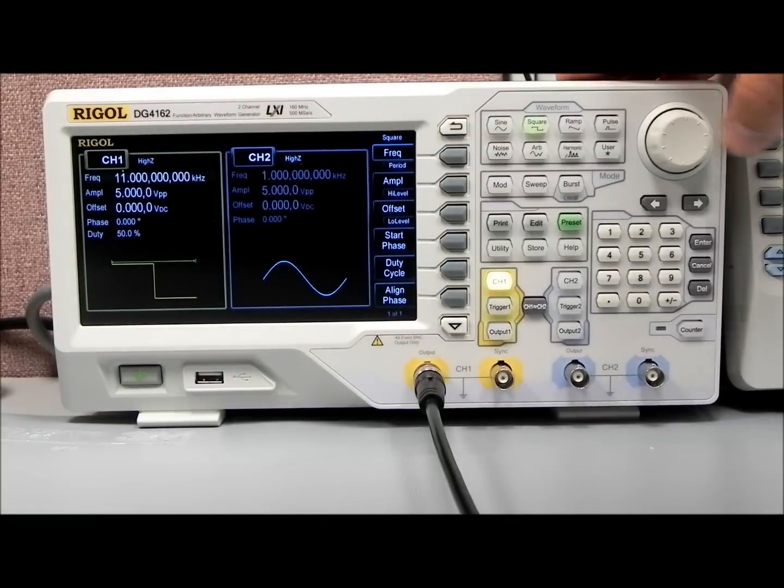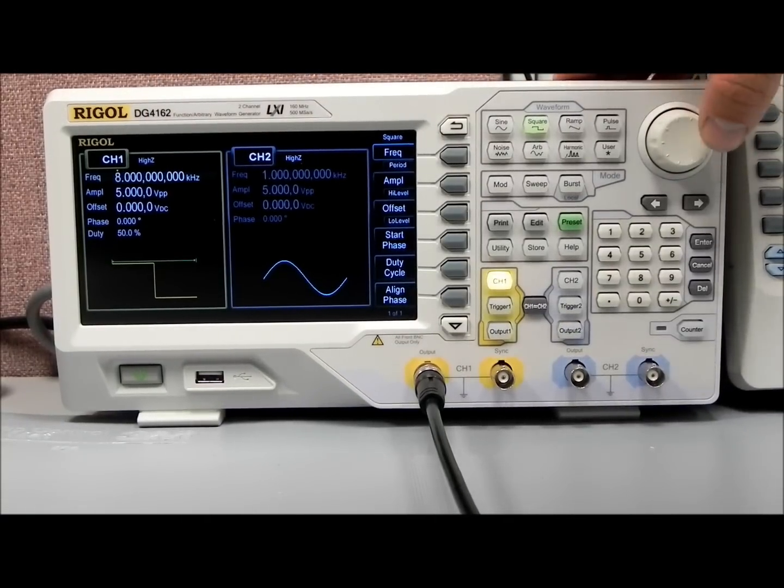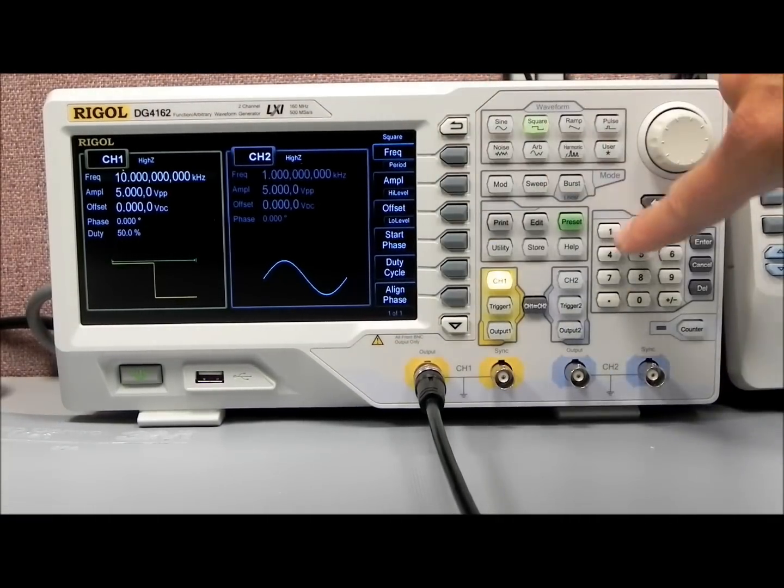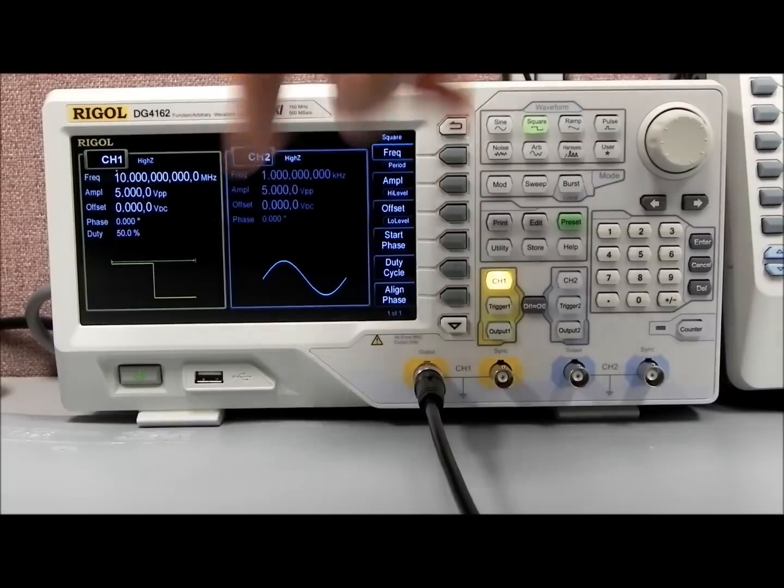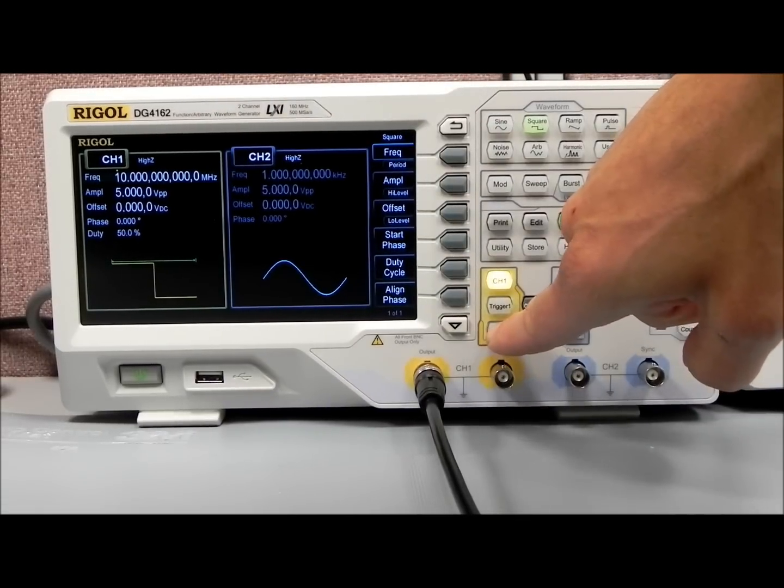We can either use a scroll wheel, and we can increase that frequency this way, or we can use the actual keypad, so we can go 10 MHz, as an example. And now let's turn that output on,